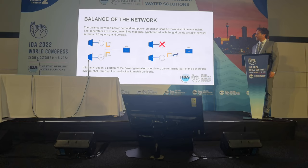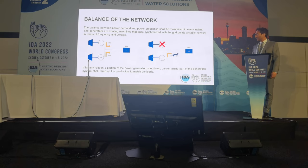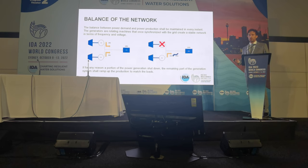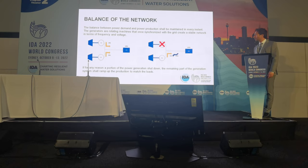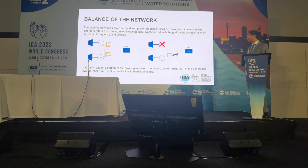To balance the network, we have to remember that production should match consumption at every instant. If we lose part of the production, we have to recover it with the spinning reserve — even if a power plant is not working at full capacity, it must ramp up faster than possible to catch the load and maintain frequency and voltage in the network.